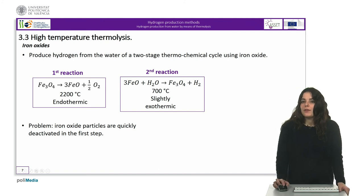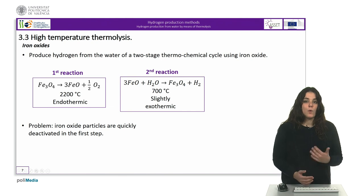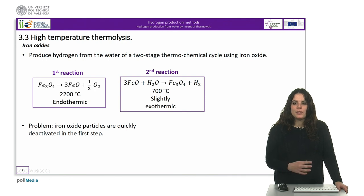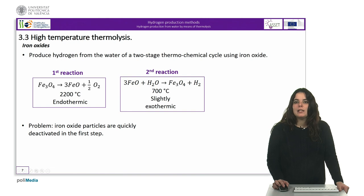As for high temperature thermolysis at temperatures above 1500°C, it is possible to produce hydrogen from water in a two-stage thermochemical cycle using iron oxides. The first reduction step is highly endothermic and thermodynamically favorable above 2200°C at one bar pressure. The second water decomposition step is slightly exothermic and is carried out at temperatures below 700°C. The problem is that iron oxide particles are quickly deactivated in the first step.